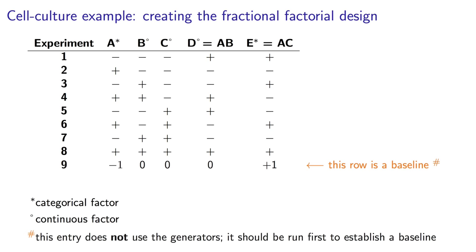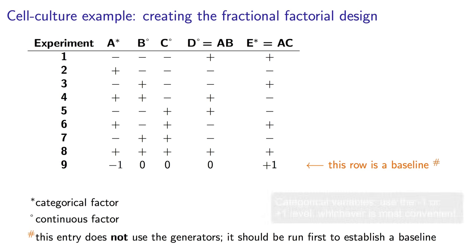So what about that potential ninth experiment? I often recommend starting with a center point or some sort of baseline experiment as your first experiment. Put all the factors at their centers, their zero value. Now categorical variables don't have a natural zero. Simply choose an arbitrary low or high value for that categorical variable.